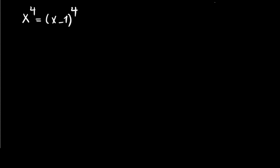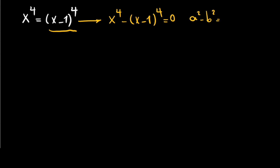For the first step, I can move the right side to the left, so we can write x to the power of 4 minus (x minus 1) to the power of 4 equals 0. You know that for example if you have a squared minus b squared, you can write it as (a minus b) times (a plus b).